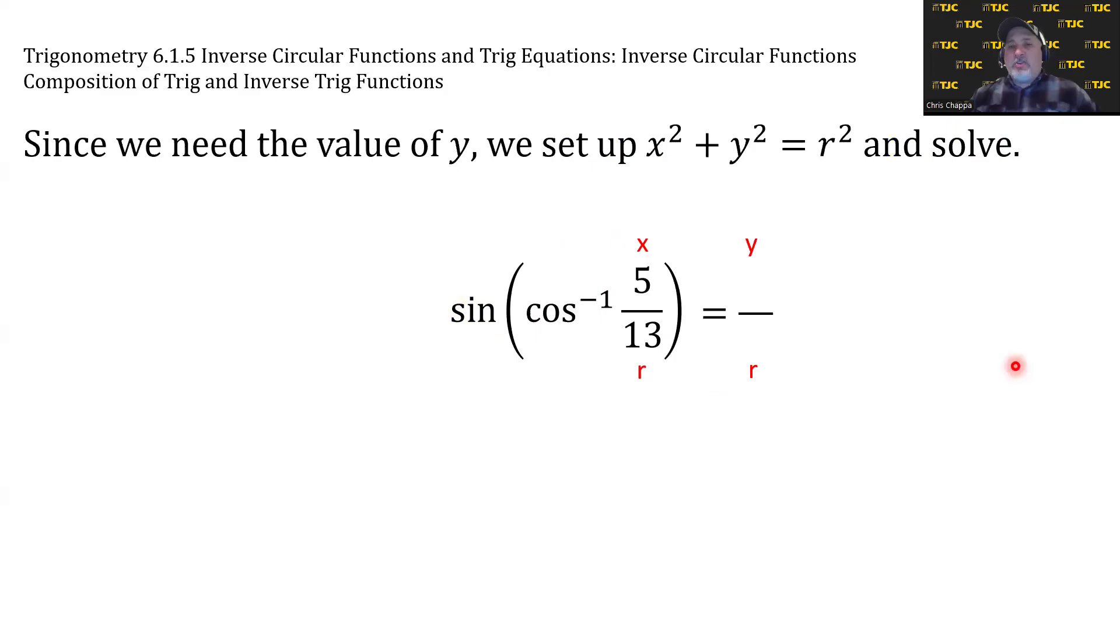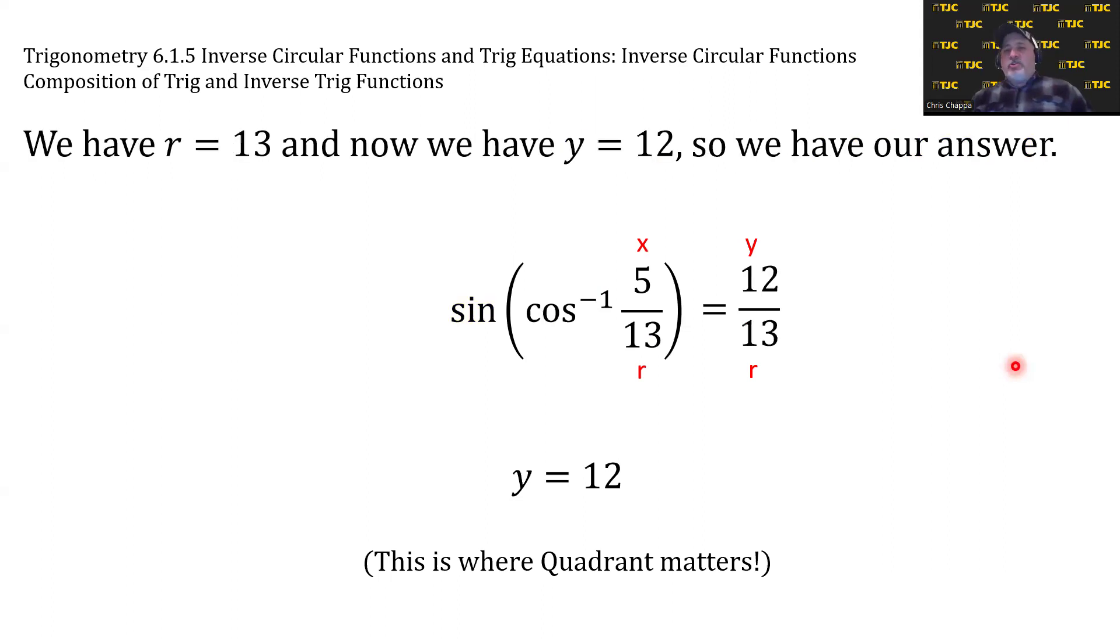And, of course, we're going to use the Pythagorean theorem. We know the value of x and r, so we can use the Pythagorean theorem to solve for y. We get 12. Technically, from an algebraic perspective, plus or minus 12. This is why you've got to stay cognizant of your quadrant. And now we can just build our answer. We have r is 13 and y is 12. We're going to take a look at another one using this approach.